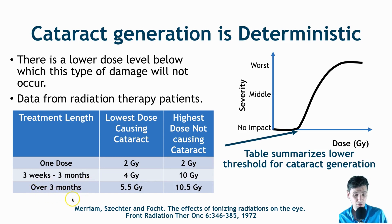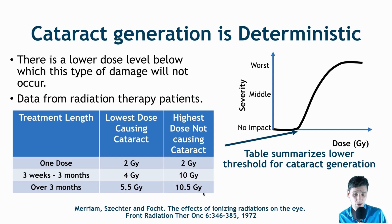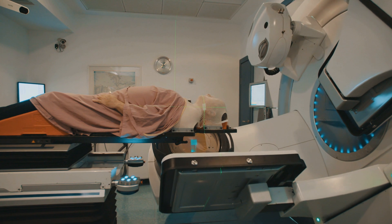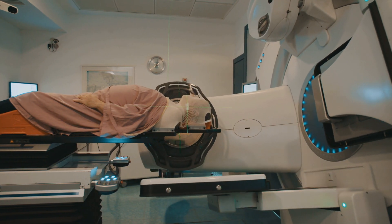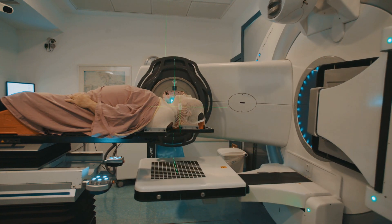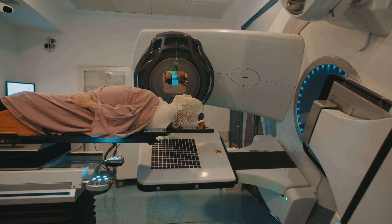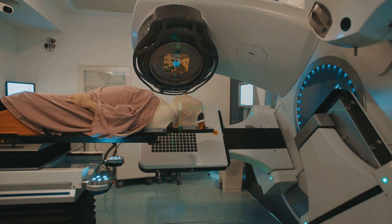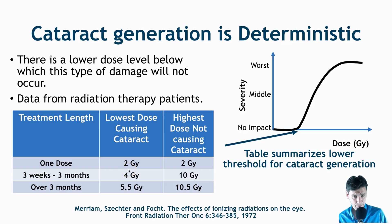For a longer fractionated treatment over three months, it takes 5.5 gray to see the first cataracts, and you could go up to 10.5 gray before all patients develop cataracts. This illustrates one motivation for fractionation — you can deposit a significantly higher total radiation dose, such as 3 or 4 gray, without inducing any cataracts. Whereas a single dose of 3 or 4 gray would cause cataract induction.